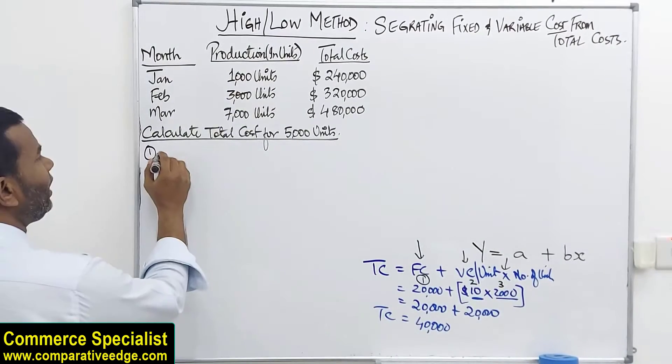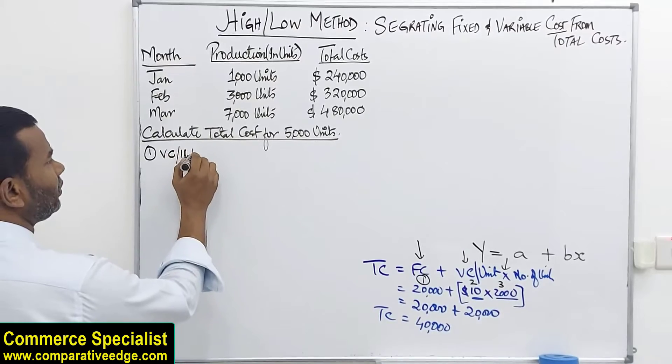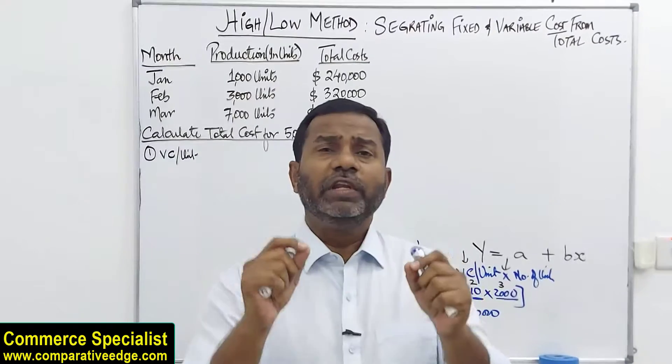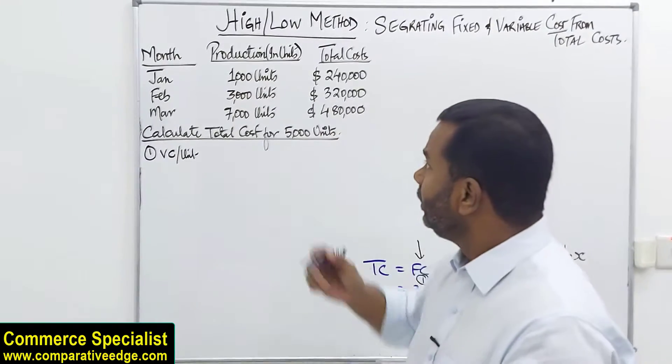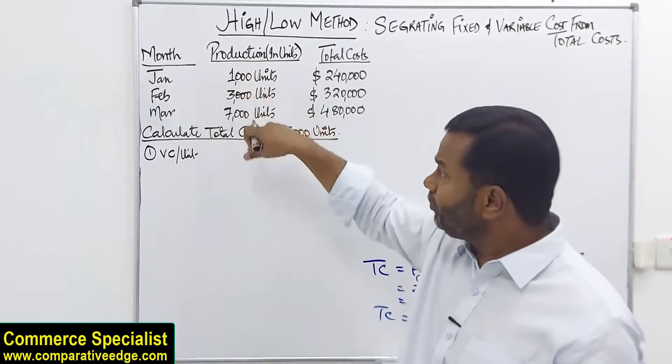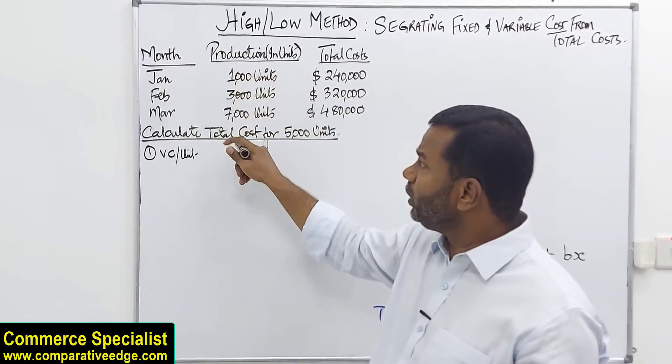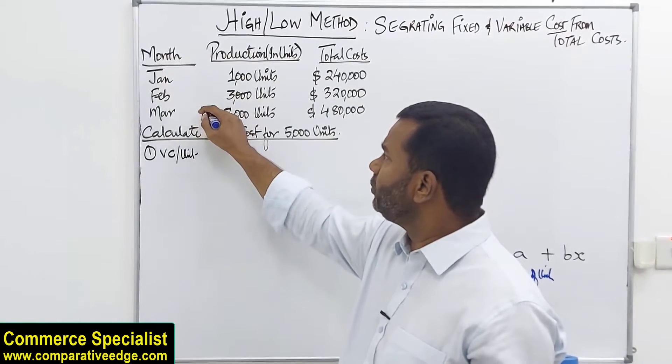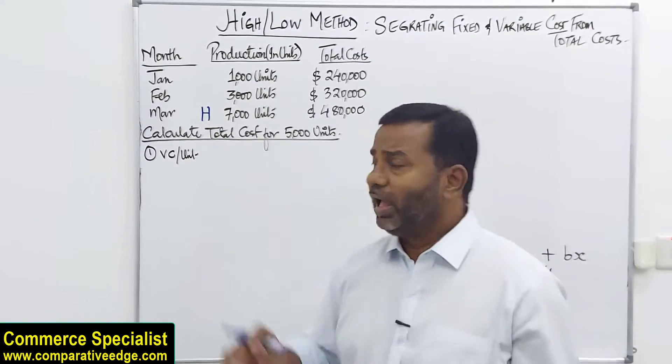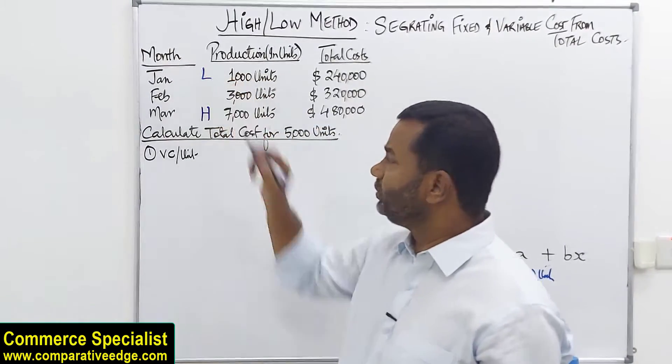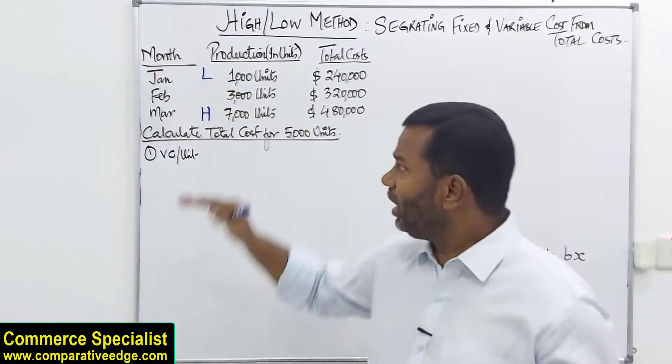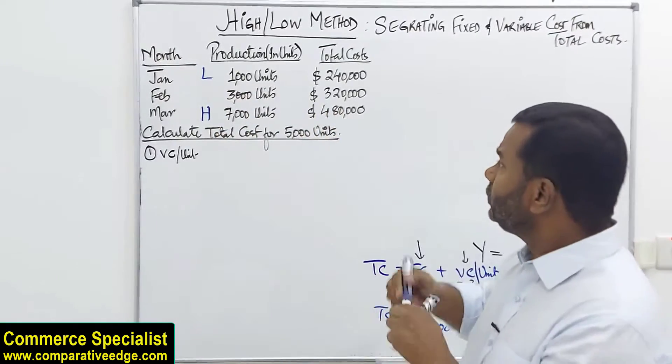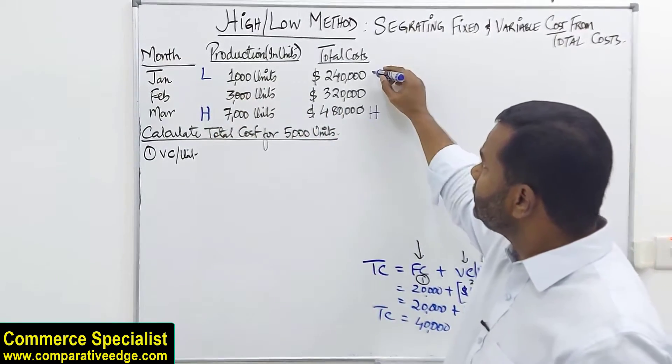Let's learn how to use high-low method to calculate the required information. The very first step we calculate variable cost per unit. In order to calculate variable cost per unit, we need to identify from the production what is the highest production. The highest production is 7,000 units. I'm marking it as high and the lowest production which is 1,000 units. Once you mark the high and the low production, look at the corresponding cost. This is the highest total cost and this is the lowest total cost.